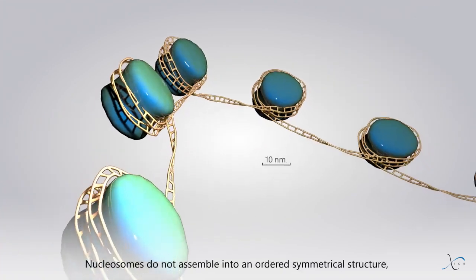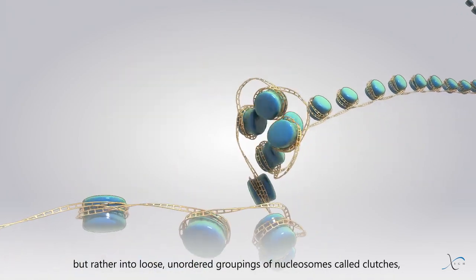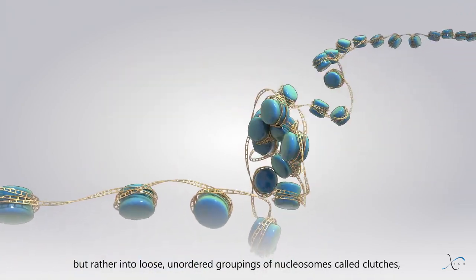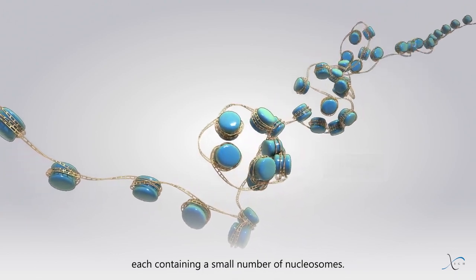Nucleosomes do not assemble into an ordered symmetrical structure, but rather into loose, unordered groupings of nucleosomes called clutches, each containing a small number of nucleosomes.